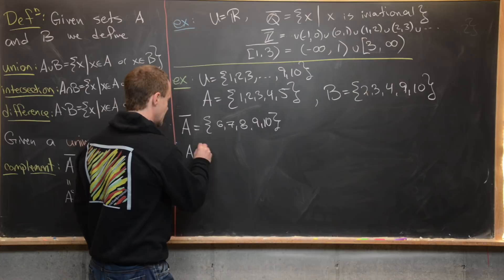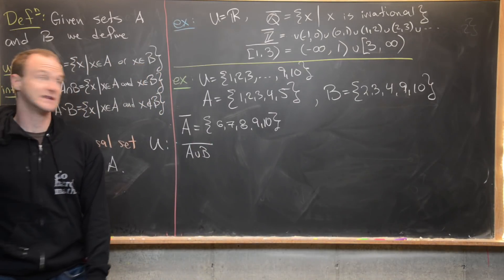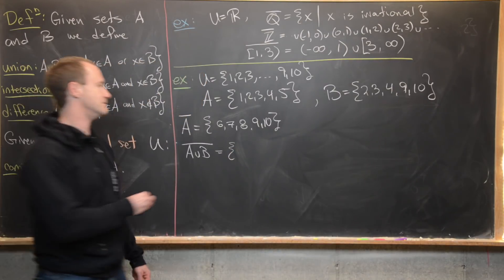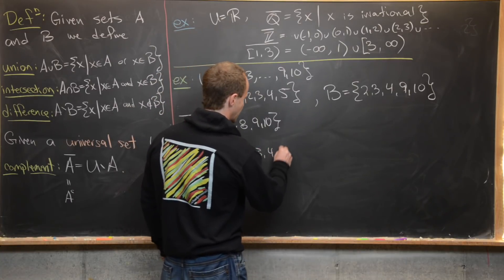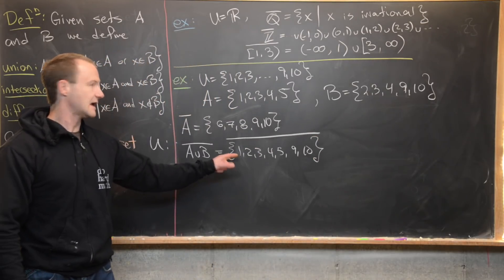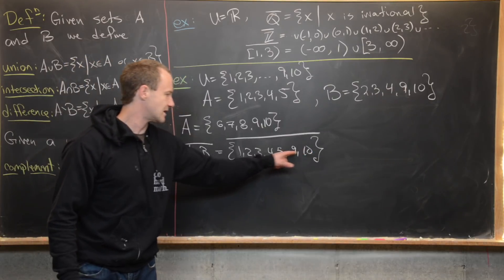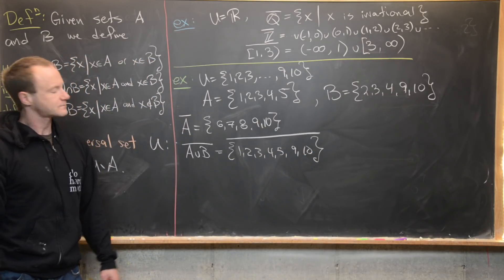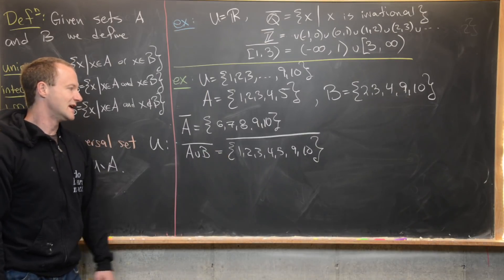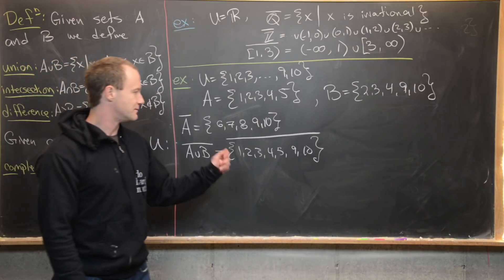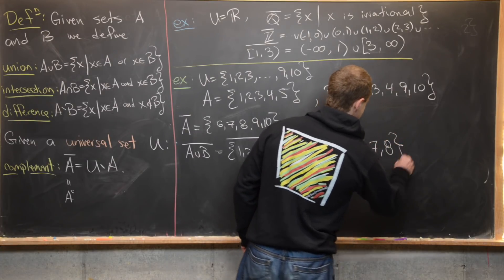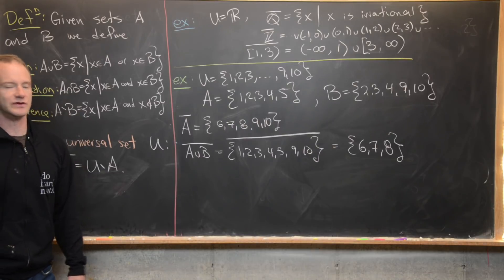Let's calculate the complement of A ∪ B. First, A ∪ B = {1, 2, 3, 4, 5, 9, 10} — everything in A or B. Taking the complement, we want everything in U not in this union: the missing numbers are 6, 7, and 8. So (A ∪ B)ᶜ = {6, 7, 8}.